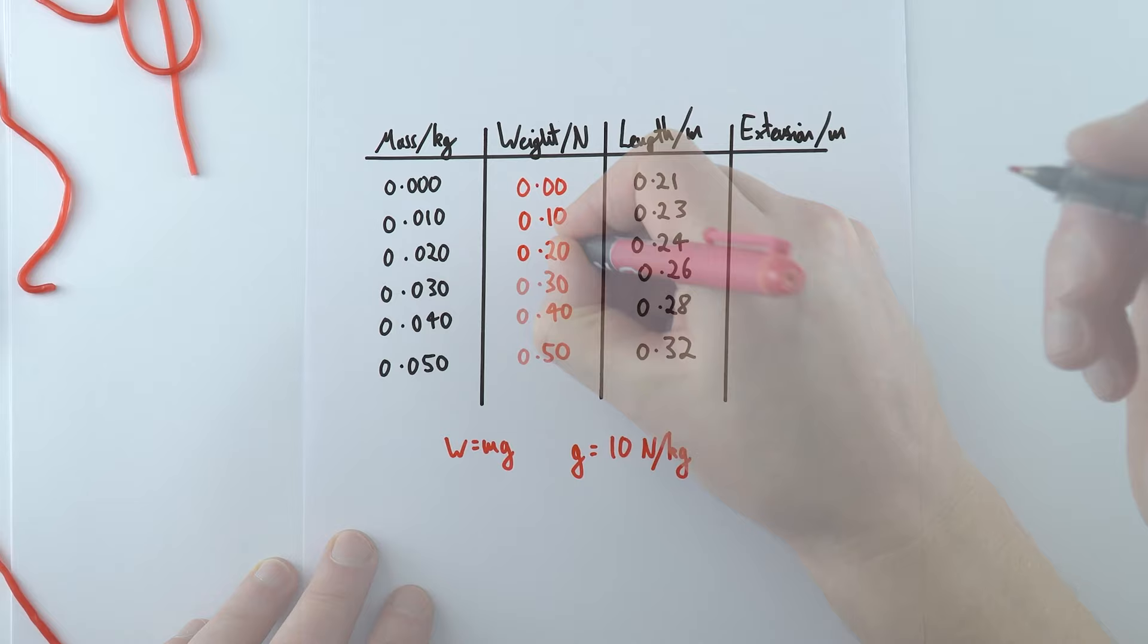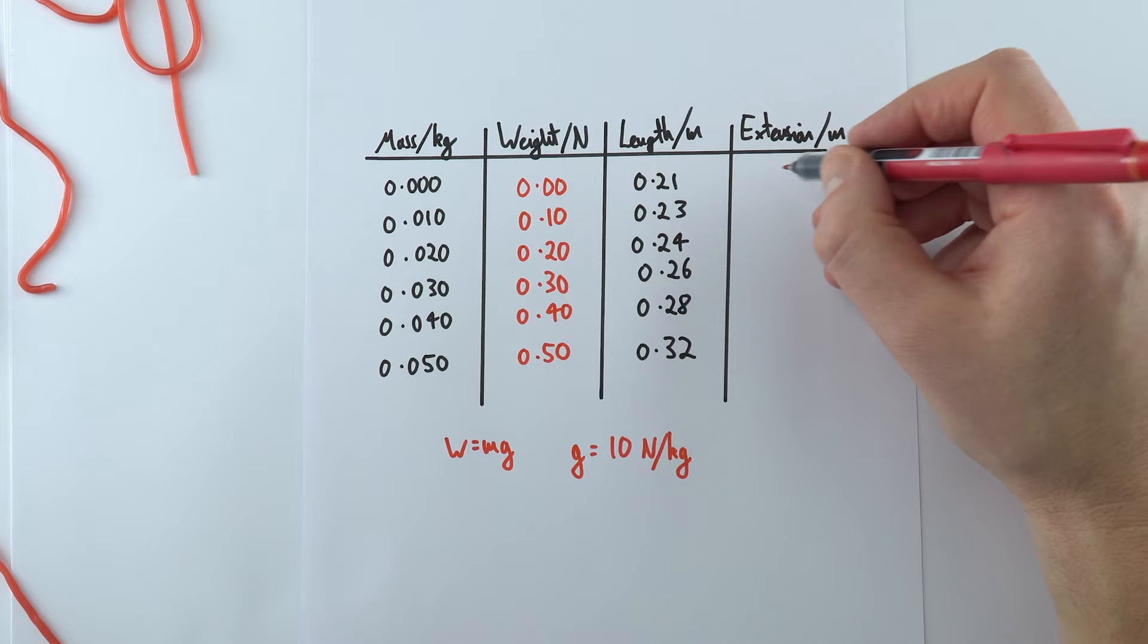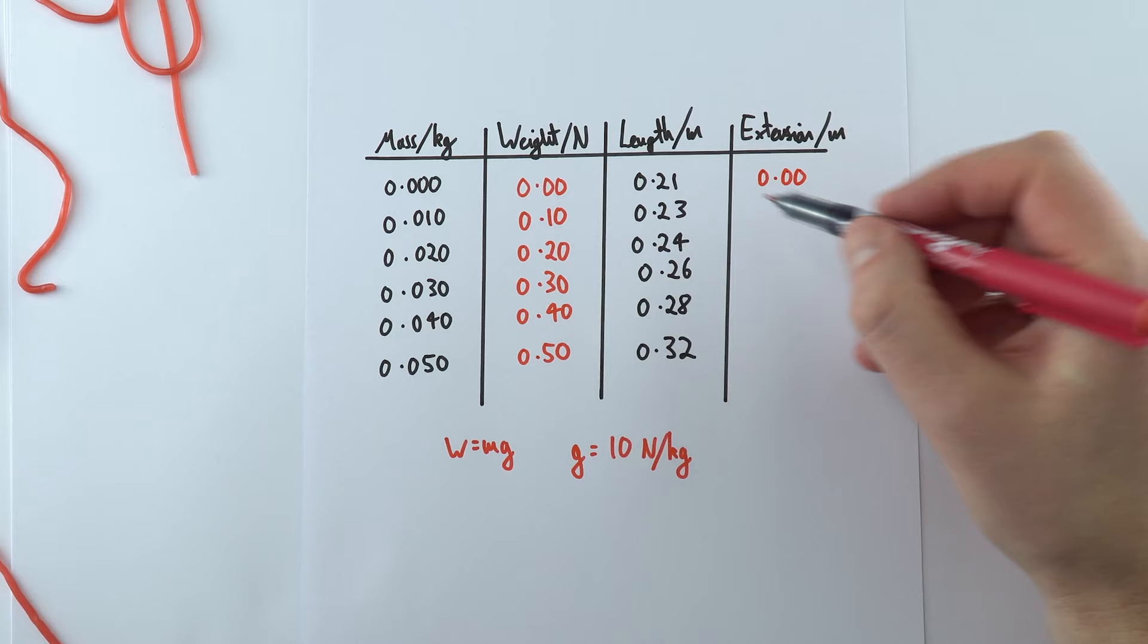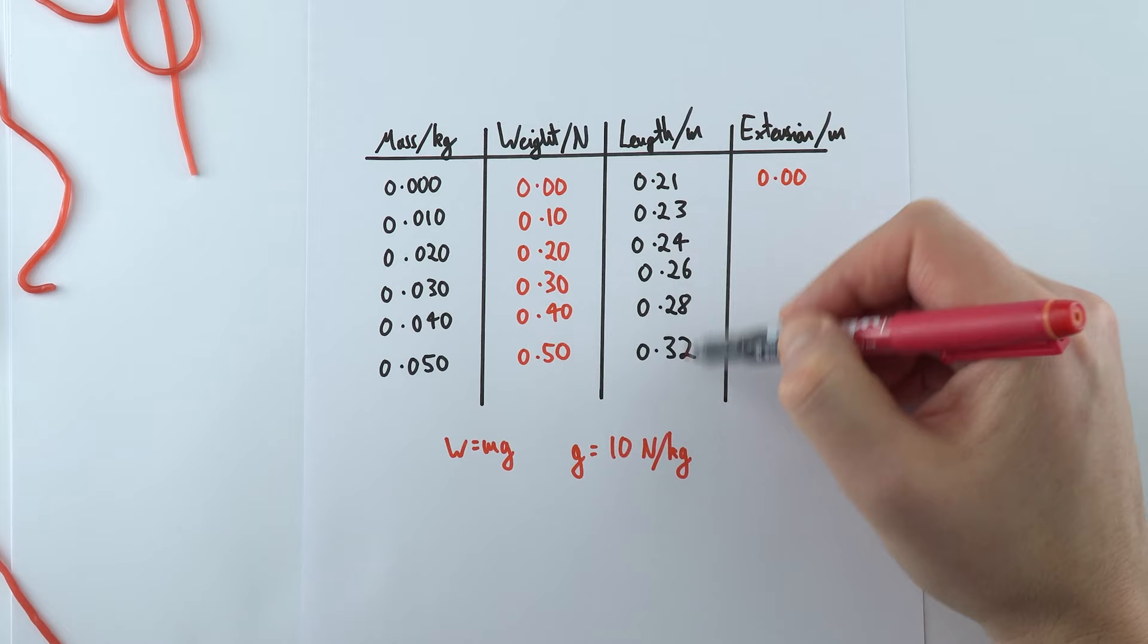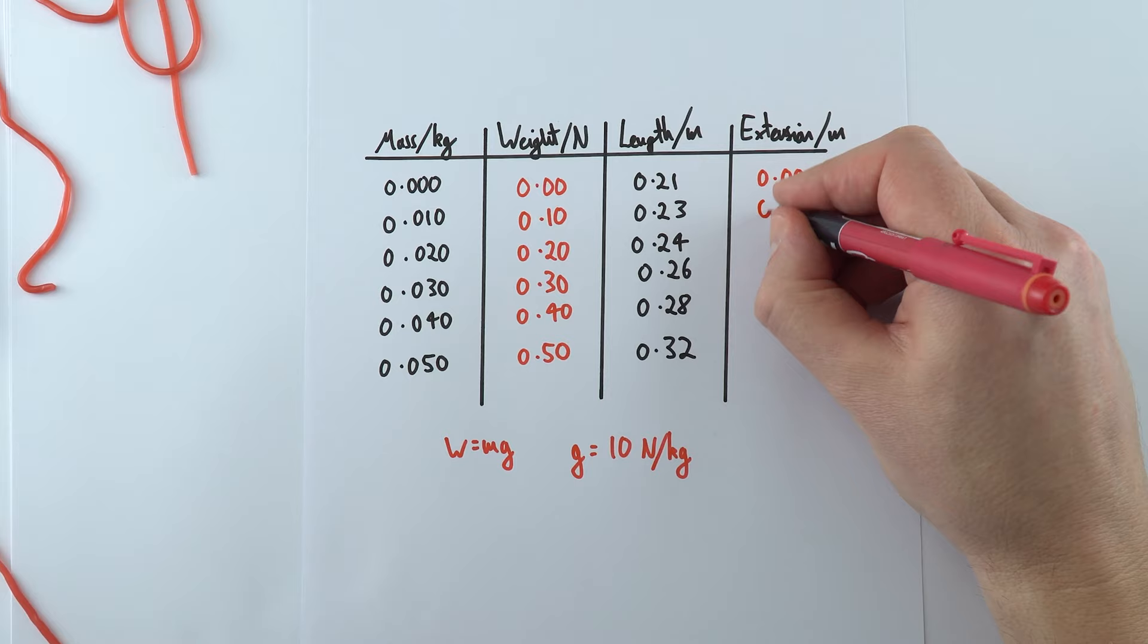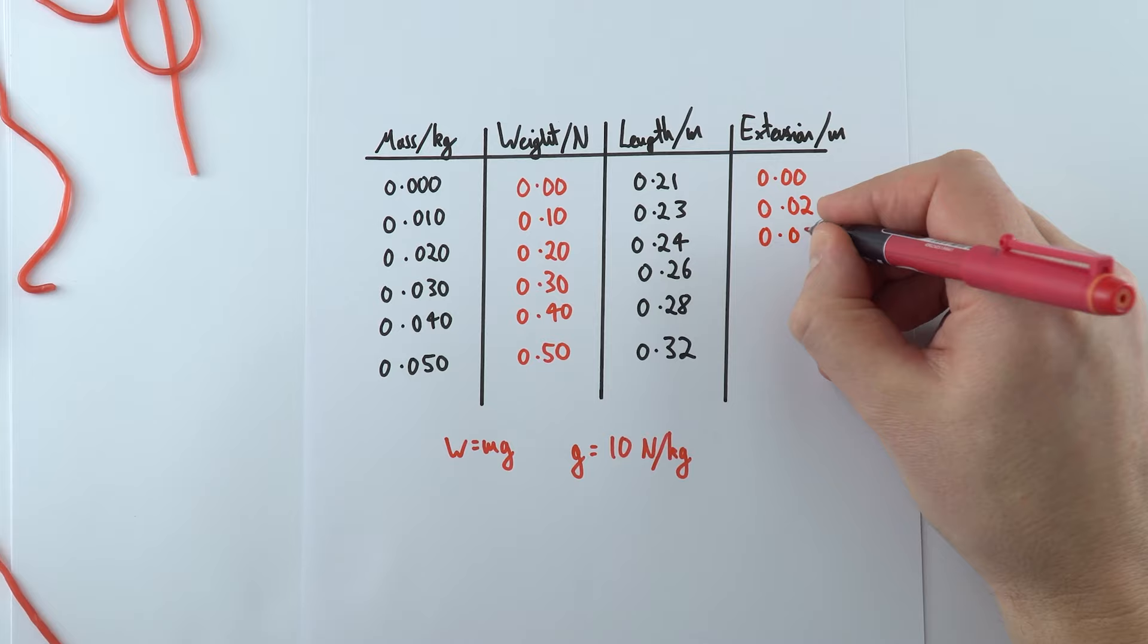Now when it comes to the extension, this is how much longer that strawberry lace got. Now initially there's going to be no extension when no force was applied. But what we're going to do for all of the rest of these values is we're going to take off 0.21, the original length, from all of these other values. So we're going to have 0.23 take away 0.21 is 0.02.